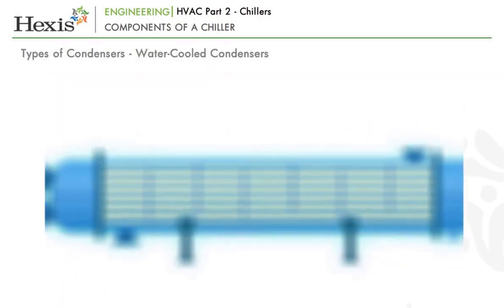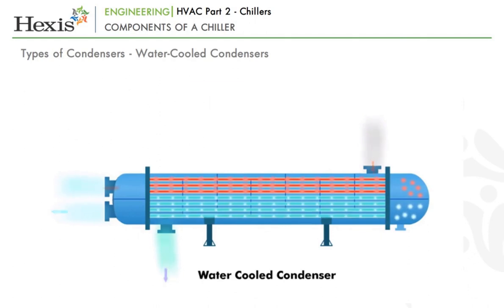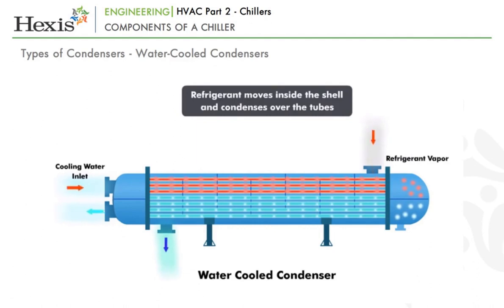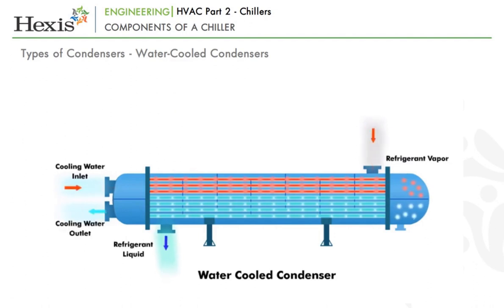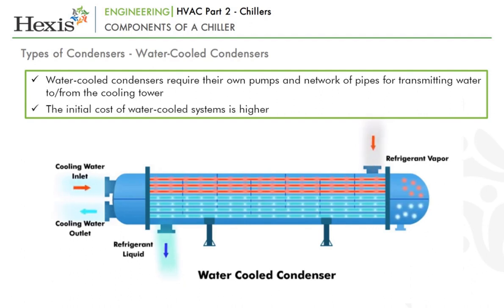In a water-cooled condenser, water is used to cool the refrigerant, and then the water is taken to a cooling tower to dissipate the heat gained. The cold water flows through tubes within the condenser, and the refrigerant moves inside the shell and condenses over the tubes, collecting at the bottom. In another variation, the refrigerant can be in tubes and the water in the shell. The liquid refrigerant is then taken to the evaporator through the expansion valve. Water-cooled condensers require their own pumps and network of pipes for transmitting water to and from the cooling tower, making the initial cost of water-cooled systems higher.